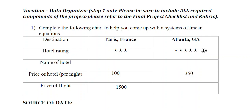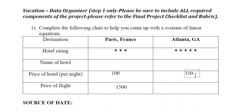Be sure that you are documenting where you found your data so that we could go back and look at it again. I'm using a three-star hotel at about a hundred dollars a night, and the price of my flight to Paris is fifteen hundred dollars. For Atlanta, I'm using a five-star hotel that costs three hundred and fifty dollars a night, and since we don't need to fly there, the flight cost is zero dollars.